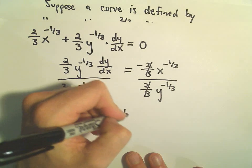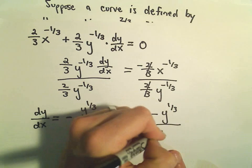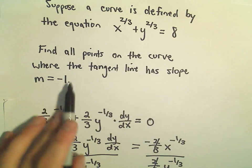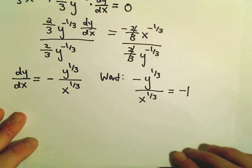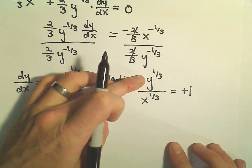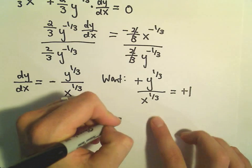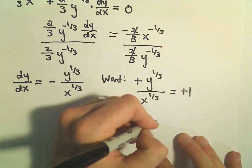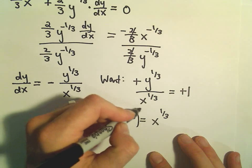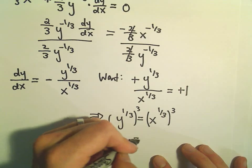So now we've got our derivative, and what we want is dy/dx — negative y to the one-third over x to the one-third — to equal negative one, because we're finding all points where the tangent line has that slope. We can multiply both sides by negative one, giving us y to the one-third over x to the one-third equals one. Multiplying both sides by x to the one-third tells us y to the one-third and x to the one-third have to be the same. Cubing both sides tells us that y has to equal x.